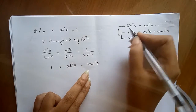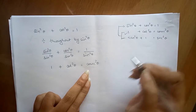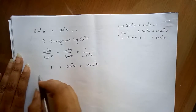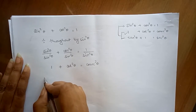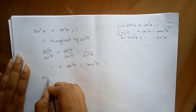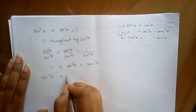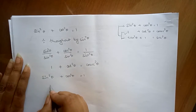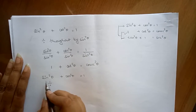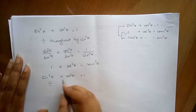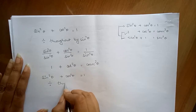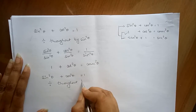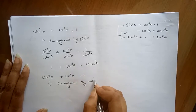We have now derived the second identity formula. In order to derive the third one, we again go back to our basic formula, sin²θ + cos²θ = 1, and now instead of dividing by sin²θ, we divide throughout by cos²θ.